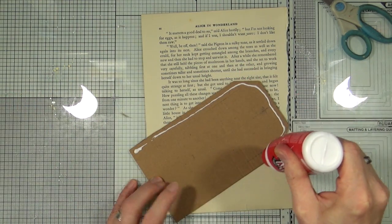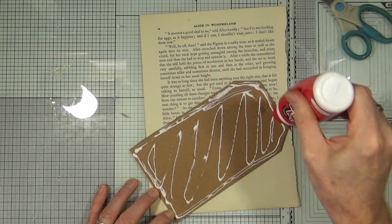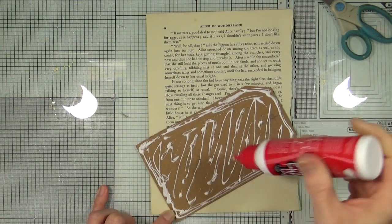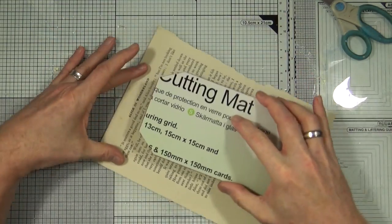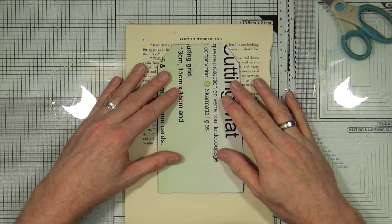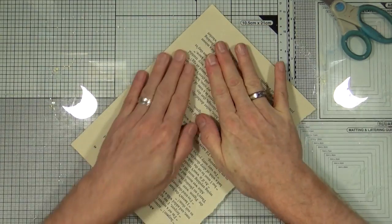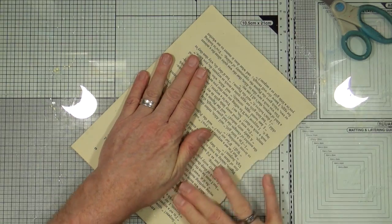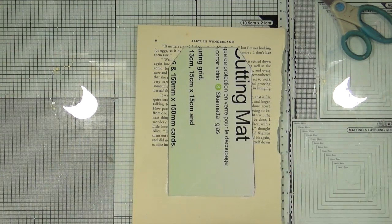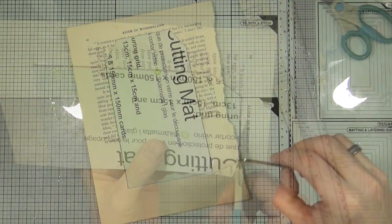I'm using the PVA tacky glue from Anita's. I'm just going to make a nice coverage with the glue all over the tag and then stick it straight down onto my book page, making sure I get the right side up. I've got a little bit of wiggle room so I'm just making sure that I get it straight, making sure all of the glue is stuck down, pushing it to the edges. When I'm happy that the glue has grabbed sufficiently, I'm going to just trim it out and take off all the excess with a pair of scissors.